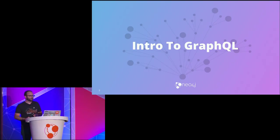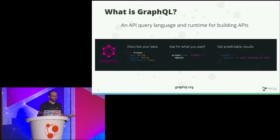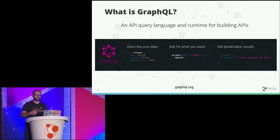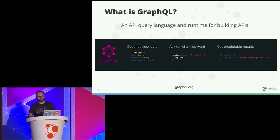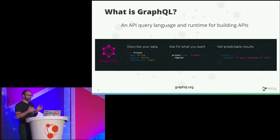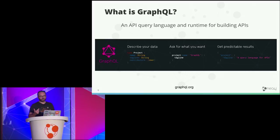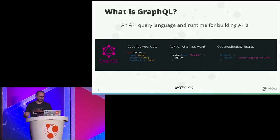So, what is GraphQL? GraphQL is an API query language and runtime for building APIs. We can think of it as an alternative to REST. With GraphQL, we start with a strict GraphQL schema that defines the types, the fields available on each type, and the entry points for our API.